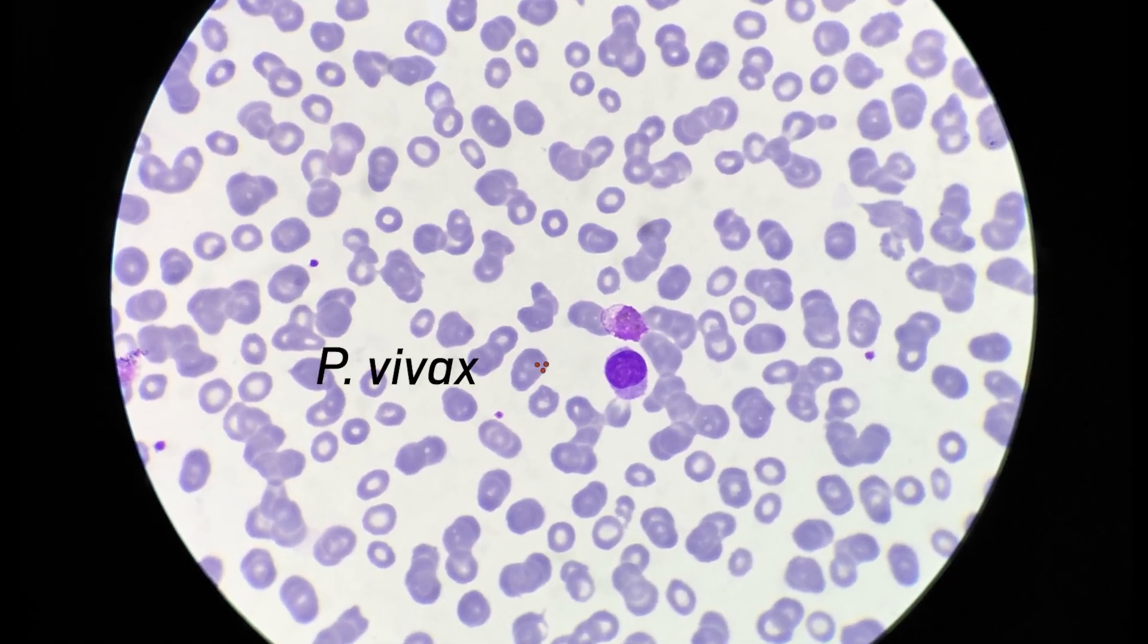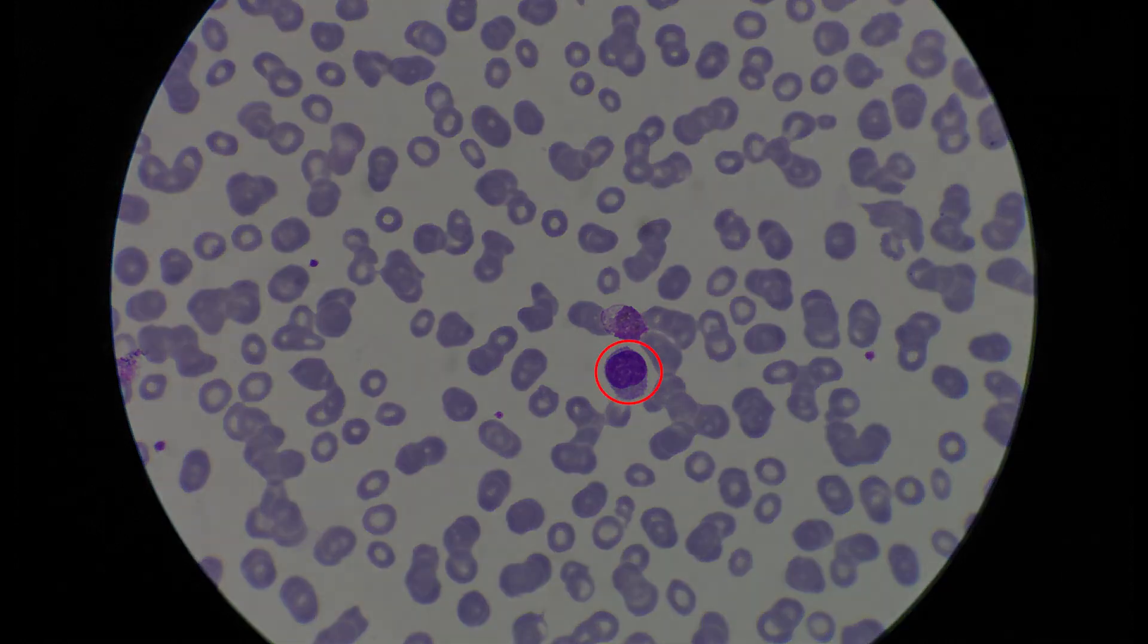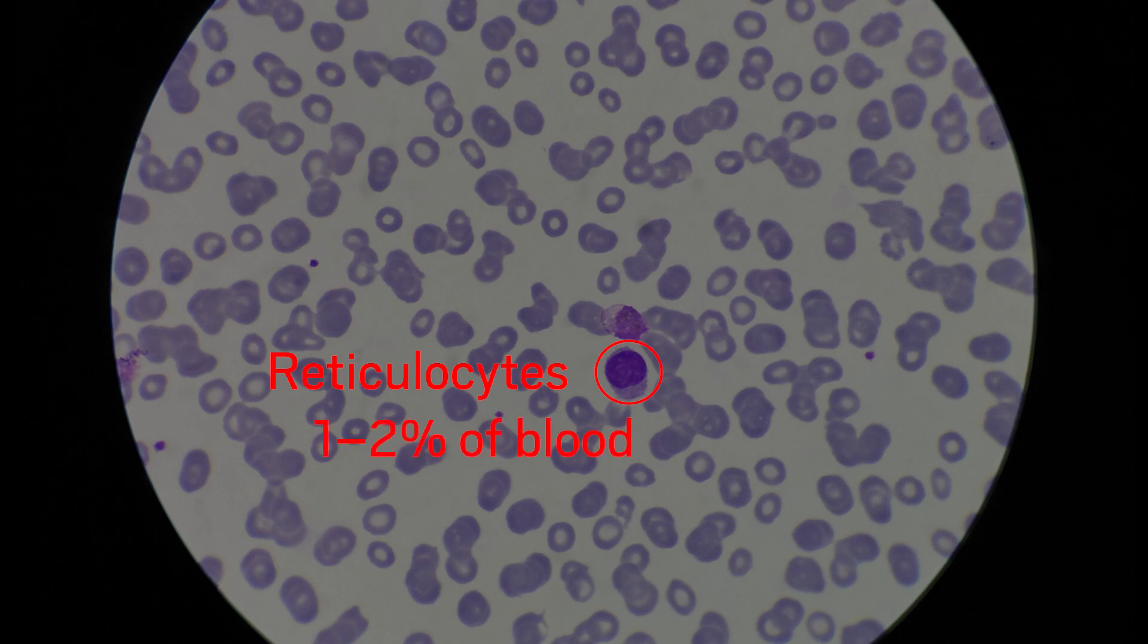P. vivax is hard to study because it's hard to get a hold of the cells it infects, immature red blood cells called reticulocytes that only account for one to two percent of the blood in a person's body.